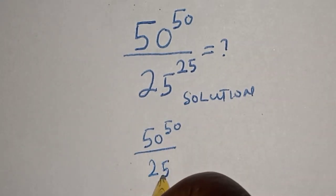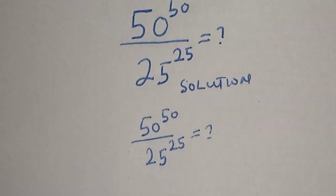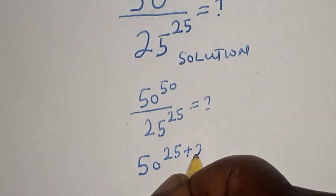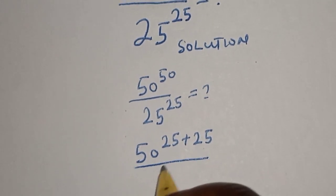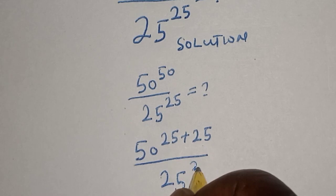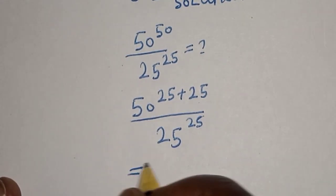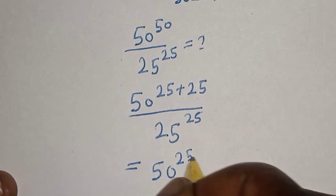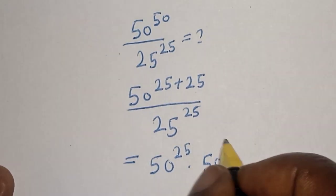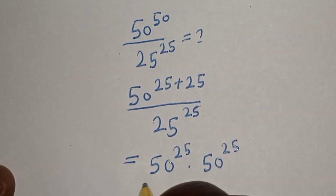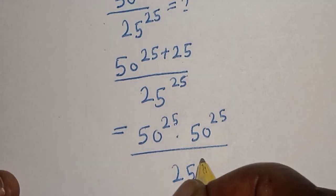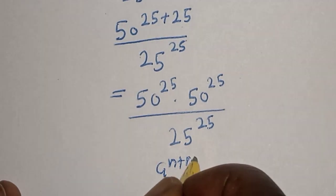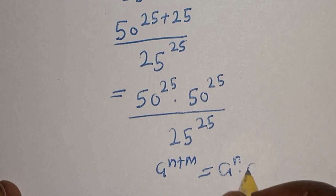50 raised to power 50 divided by 25 raised to power 25 is equal to 50 raised to power 25 plus 25, divided by 25 raised to power 25. This equals 50 raised to power 25 multiplied by 50 raised to power 25, divided by 25 raised to power 25. That uses the rule: a raised to power n plus m equals a raised to power n multiplied by a raised to power m.